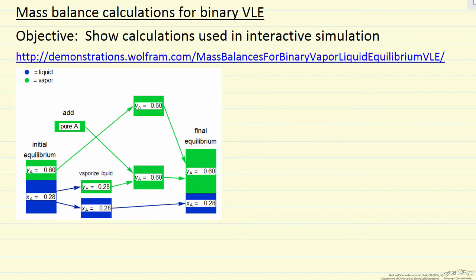The idea is that we add pure A, we have to vaporize a fraction of the liquid, mix it with A so that the mole fraction is 0.6, so that we end up with the correct mole fraction. What I'm going to do here is just go through some of the calculations to make it clear how that's possible.